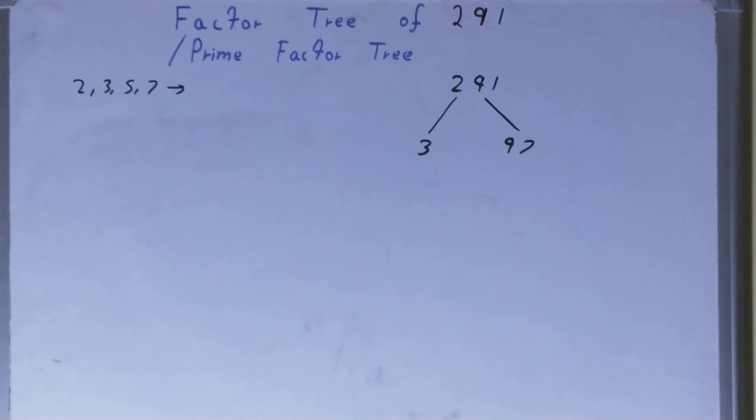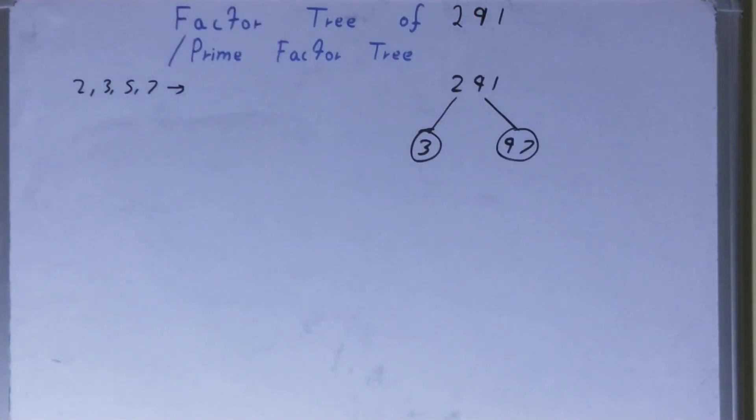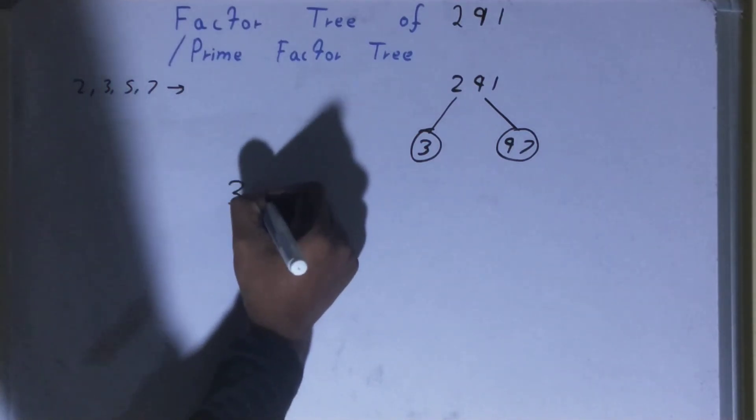is done. The only thing you need to do is circle out the ending nodes or the terminating nodes like this, and that will be your required factor tree. Now if you want, you can write it separately